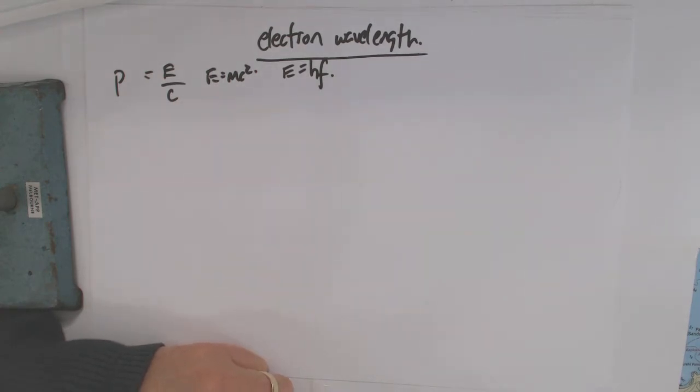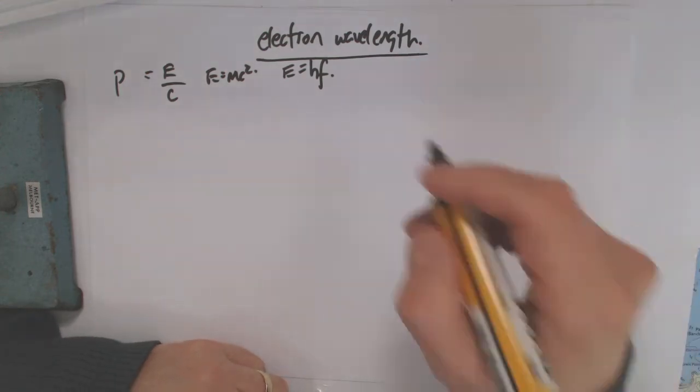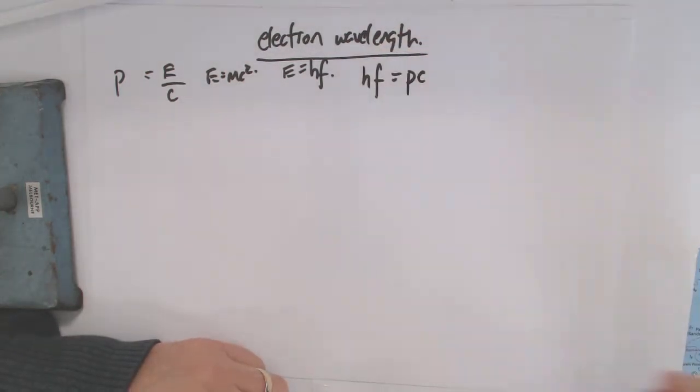So E equals HF, that one we've learned out for quantization of photons. So basically at this stage we could relate these back and say HF equals PC, right? What is that going to tell us?